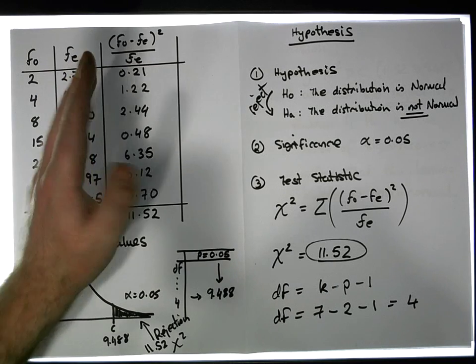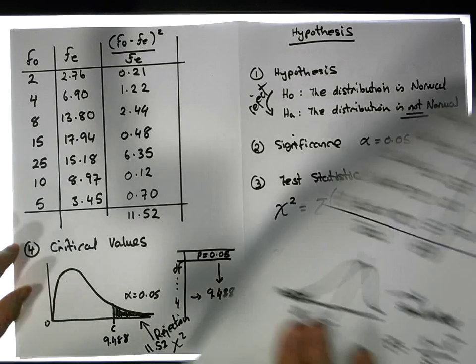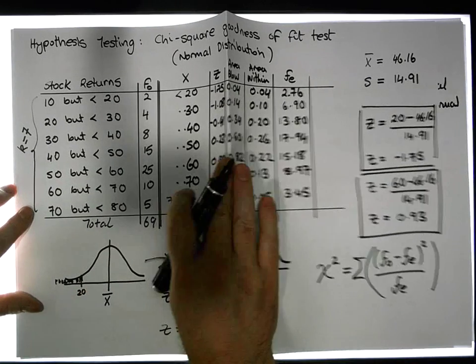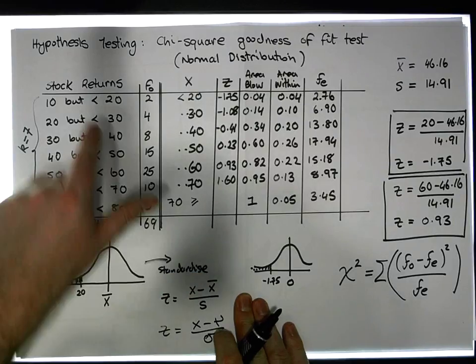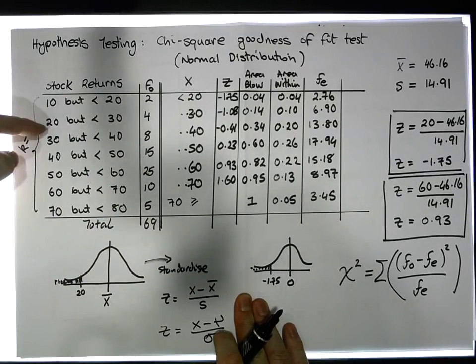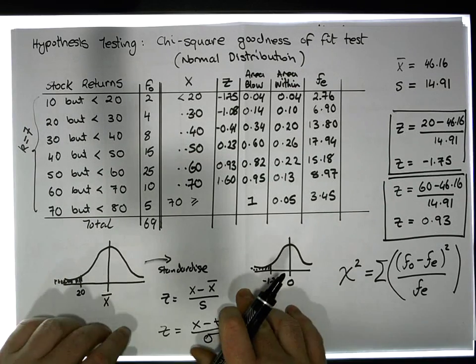At the start of this question, we were given some observed frequencies with respect to a particular variable. The variable had a number of categories—it was ordinal but categorical.